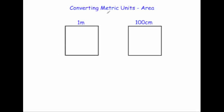In this video we're going to look at how to convert between metric units for area. Here I've drawn a one by one meter square — its area would be one meter squared, because one times one is one. One meter is the same as 100 centimeters, and if you do 100 times 100 centimeters to get the area of this square, it would be 10,000 centimeters squared.